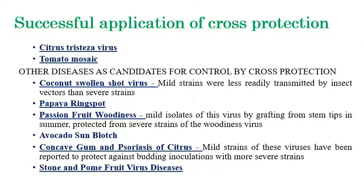Current commercial applications of cross protection include citrus tristeza virus, tobacco mosaic virus, coconut swollen shoot virus, papaya ring spot virus, passion fruit woodiness, avocado diseases, concave gum, psoriasis of citrus, and stone and pome fruit diseases. By inoculating with mild strains, plants develop internal immunity to sustain against severe strains of plant viruses.